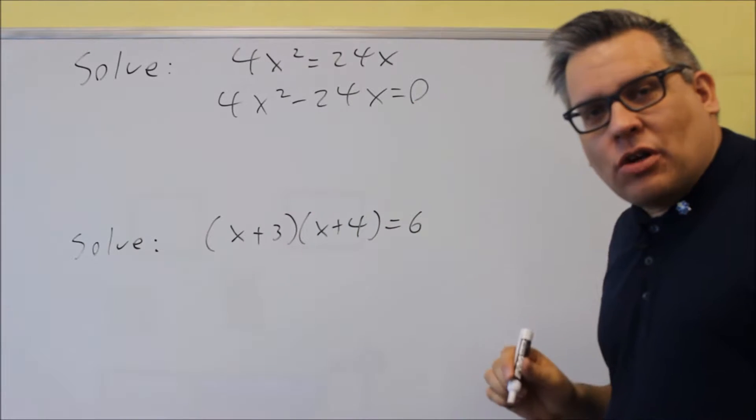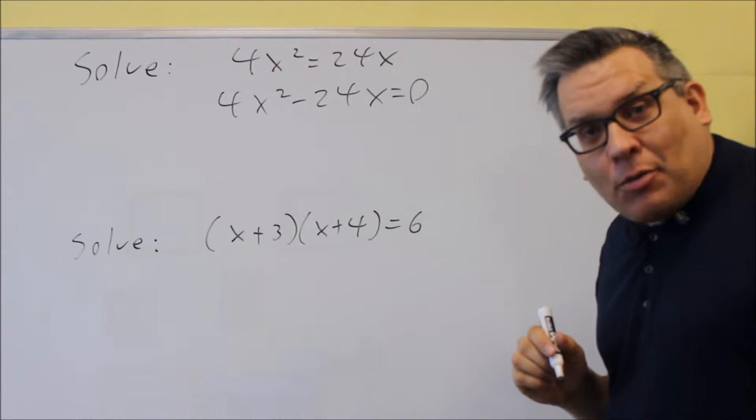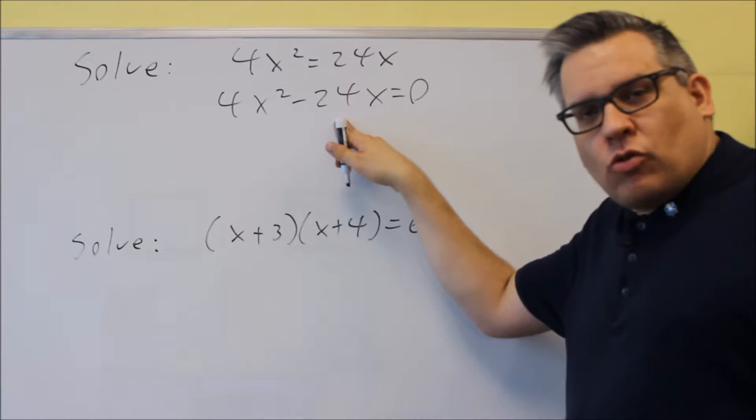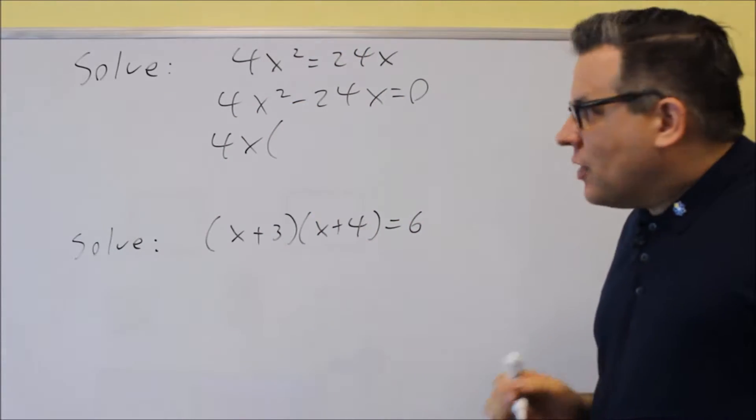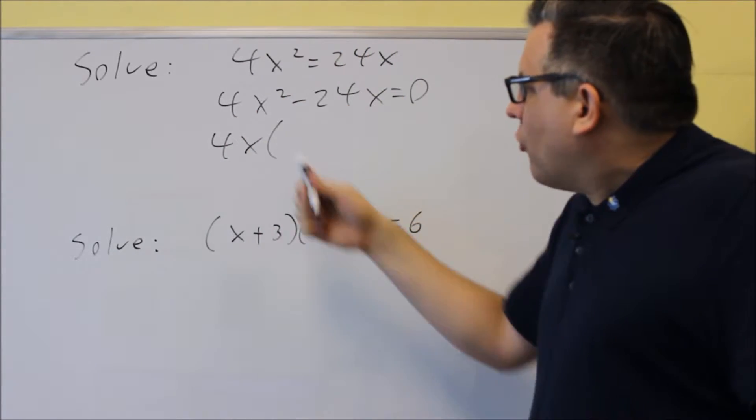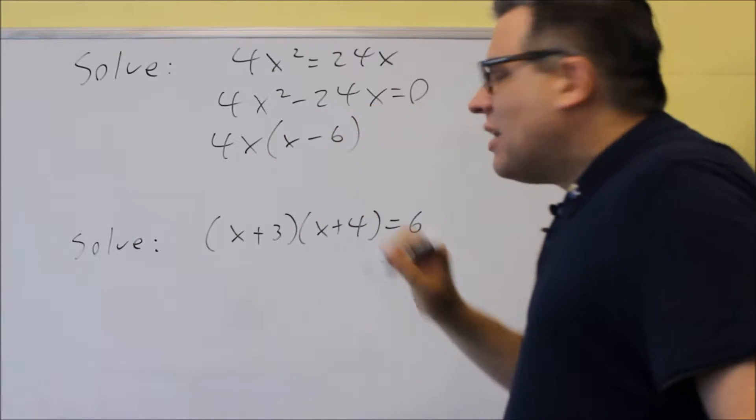Because I only have two terms here, I'm just going to be pulling out a common factor. So I look for what goes in evenly into both of these. That's going to be 4x. So if I take out the 4x, I'm going to be left with x minus six.